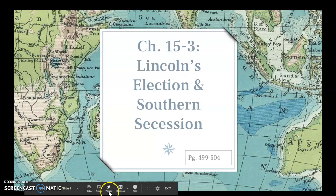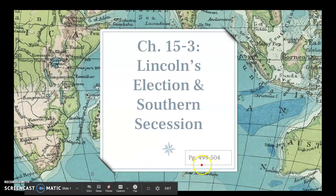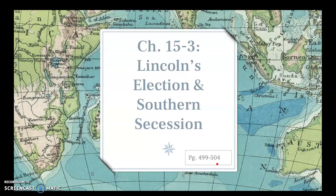All right, we are back, guys. We are going to look at the election of 1860 today. That election brings Abraham Lincoln to the White House. The pages we're going to be looking at today are 499 to 504 in your textbook. This is a really dense chapter with tons of information, so we're going to divide this slideshow up into two parts. We're just going to be doing the first 13 slides today, and then on Thursday we'll do the final slides.